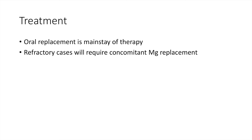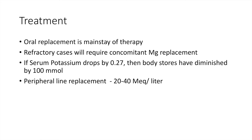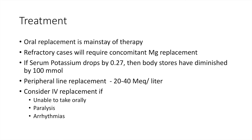Treatment of patients with hypokalemia is generally oral, which forms the mainstay of therapy. Magnesium replacement may be required for refractory cases. When body stores diminish by 100 milliequivalents, the serum potassium drops by 0.27, though this fact is rarely relevant from a clinical perspective. A peripheral line can replace 20 to 40 milliequivalents per hour, whereas a central line can replace up to 80 milliequivalents per hour. Intravenous potassium is given if the patient is unable to take it orally, or has paralysis or arrhythmias.